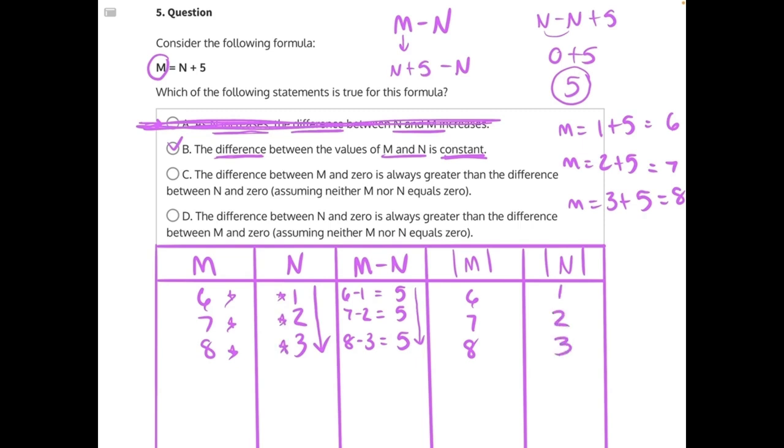Now, for these three variables, these absolute values of M are greater than the absolute values of N. But what if I were to plug in a negative number for N, like negative 6? We would have M equals negative 6 plus 5, which would give us M equals negative 1.